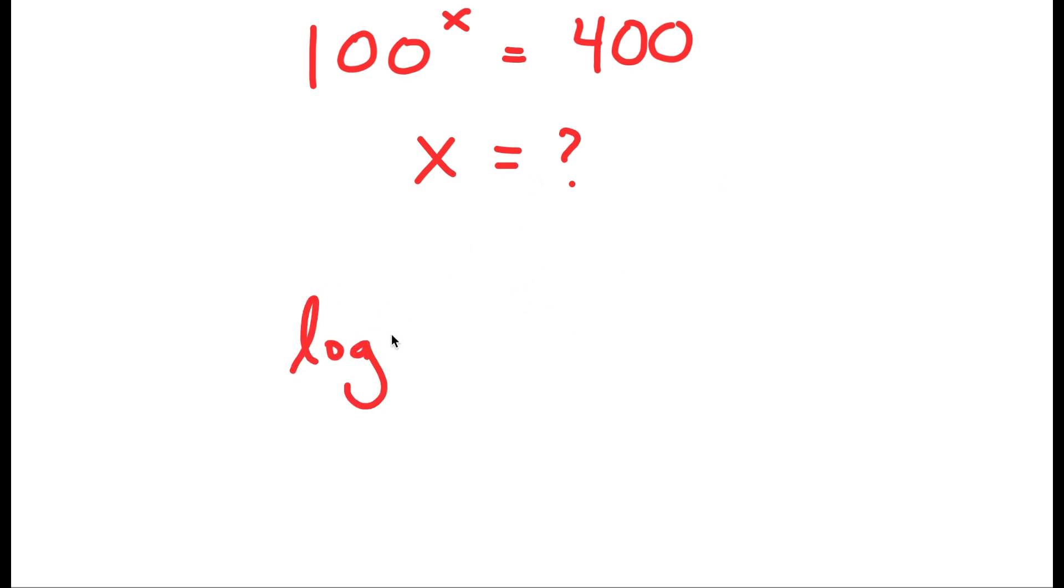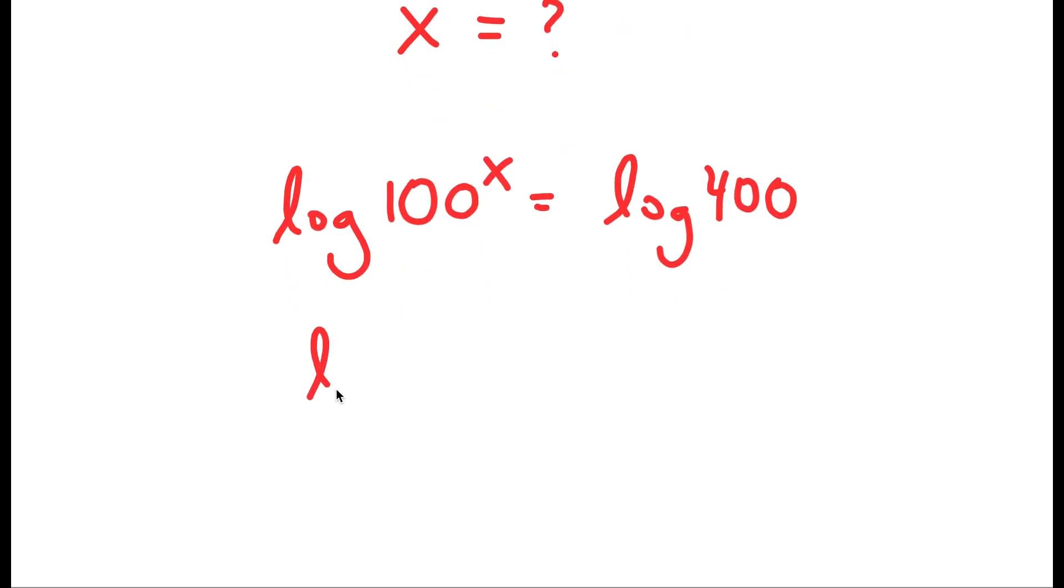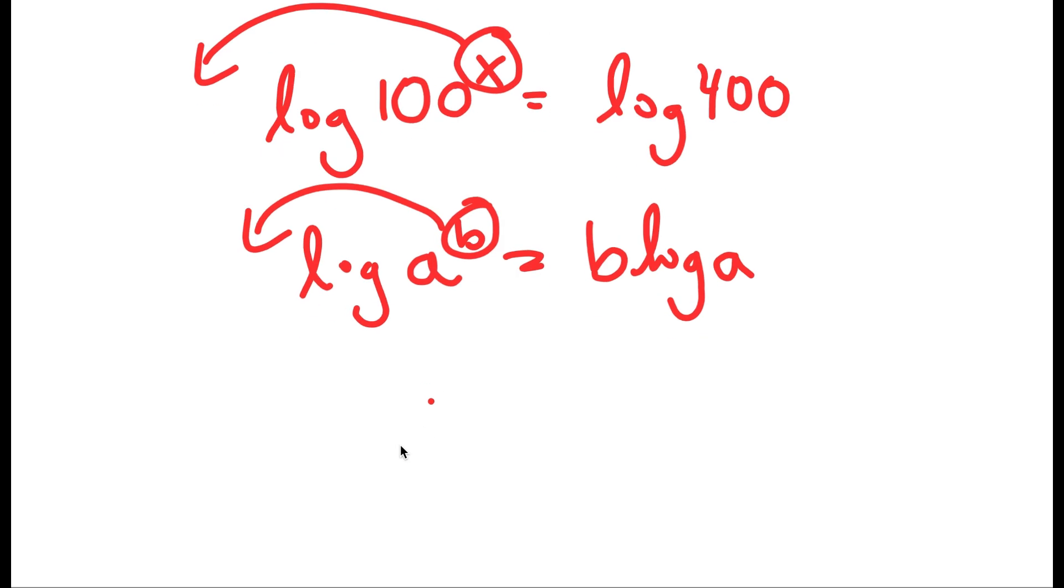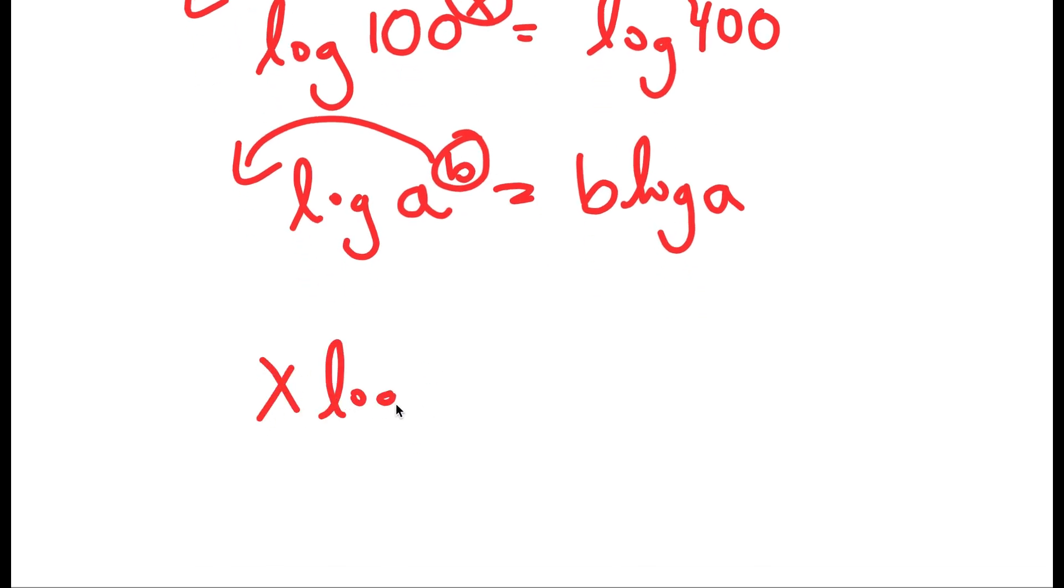I'm going to first start by taking the log on both sides. I get log 100 to the power of x is equal to log 400. If I have something in the form log a to the power b, I can move b to the front, so I get b times log a. In this case, I have log 100 to the power of x. I can move x to the front, so I get x times log 100 is equal to log 400.